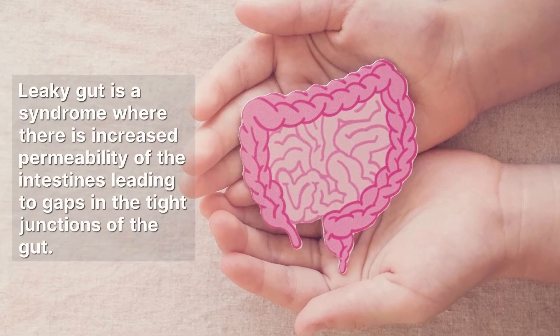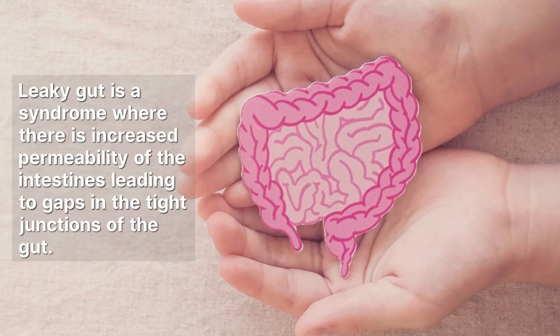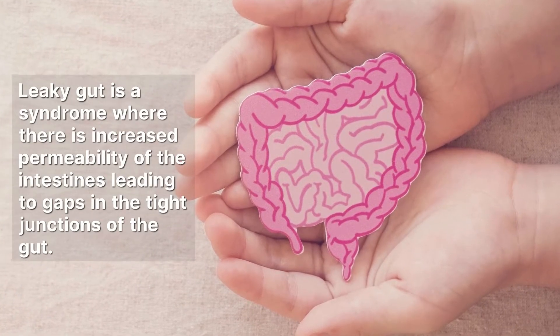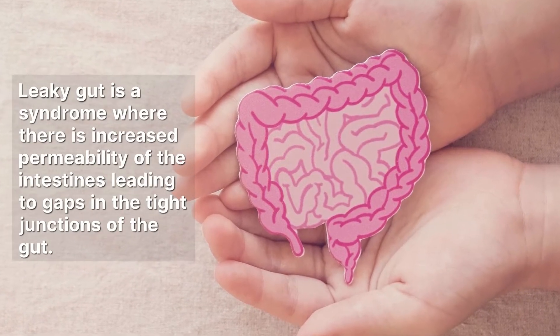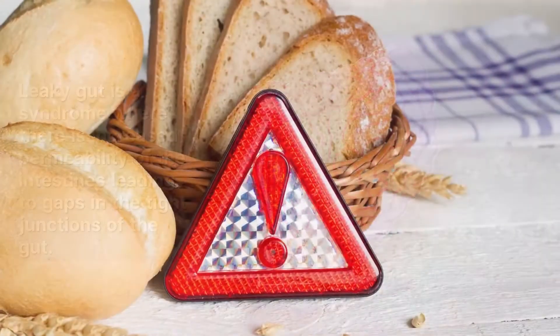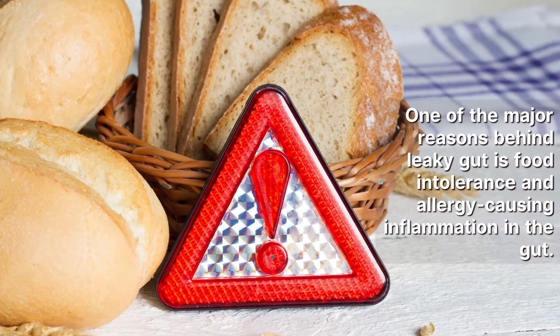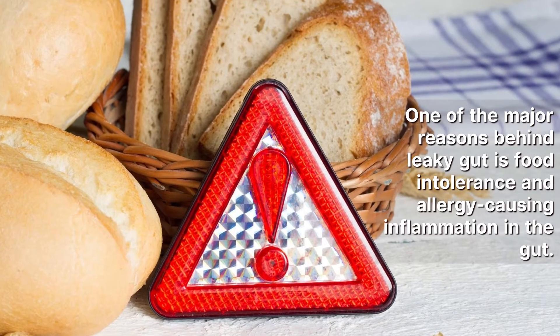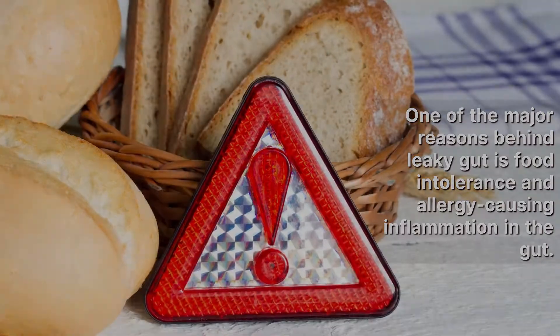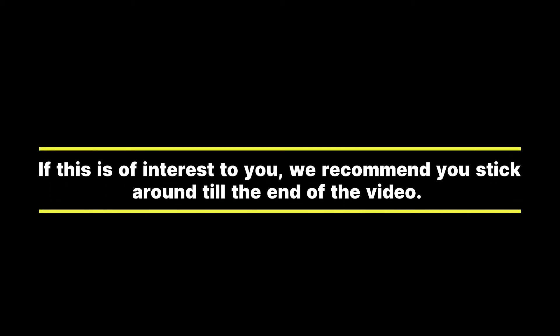Leaky gut is a syndrome where there is increased permeability of the intestines, leading to gaps in the tight junctions of the gut. One of the major reasons behind leaky gut is food intolerance and allergy causing inflammation in the gut. In this video, we will cover foods which you want to avoid with a leaky gut. If this is of interest to you, we recommend you to stick around till the end of the video.